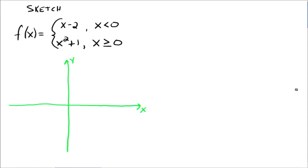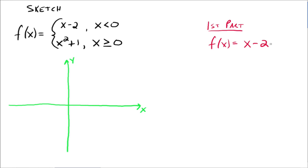So now how about graphing? The way I like to do these is in parts. We can graph the first part, which is x minus 2, and then graph the second part. For the first part, f of x equals x minus 2. Back in our piecewise function, our graph changes from x minus 2 to x squared plus 1 when x is 0, so something happens at 0.